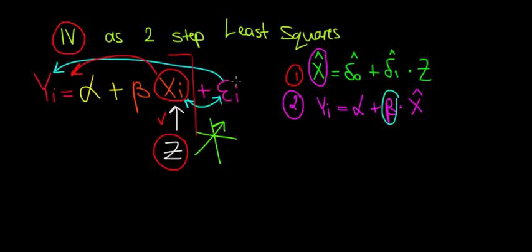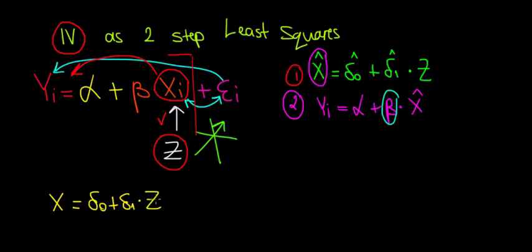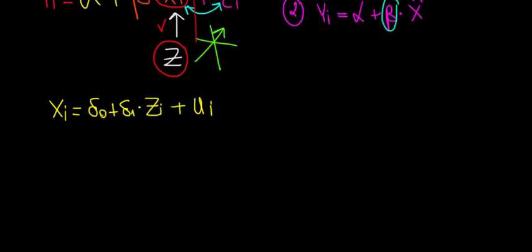Let's write the population regression line, meaning we're going to include the error term. Across the entire population, we're always going to have some error terms that we cannot measure, so we have to keep that in mind. We do so for the sake of the math — we want to work out what δ is and use it in the next equation. So x is equal to δ₀ plus δ₁ times z, with an unexplained term u, written as xᵢ = δ₀ + δ₁zᵢ + uᵢ, where i stands for individual.